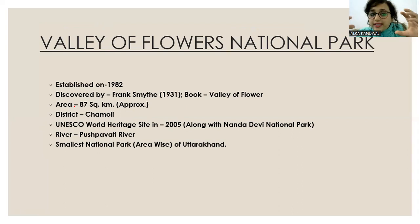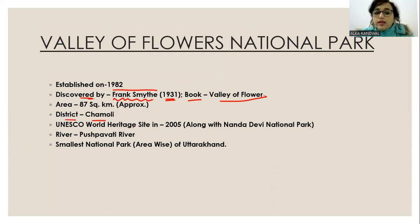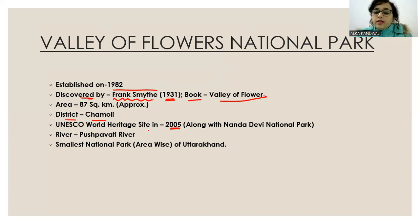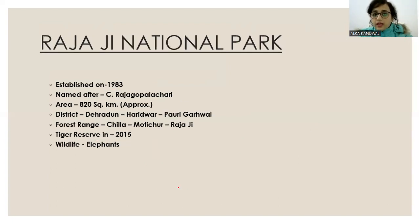Valley of Flowers National Park was established in 1982. It is the smallest national park in Uttarakhand with an area of approximately 87 square kilometers. It was discovered by Frank Smythe, who wrote the book 'Valley of Flowers' in 1931. The district is Chamoli. It was designated a UNESCO World Heritage Site in 2005, along with Nanda Devi National Park. The river associated with it is the Pushpavati River.